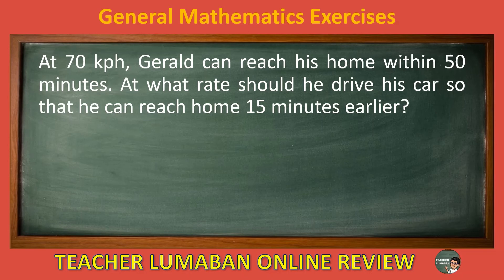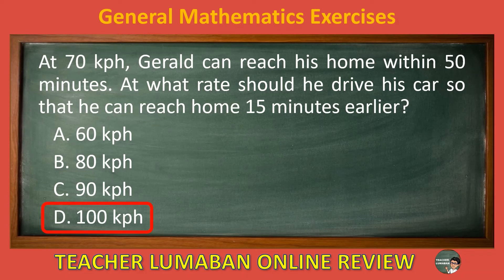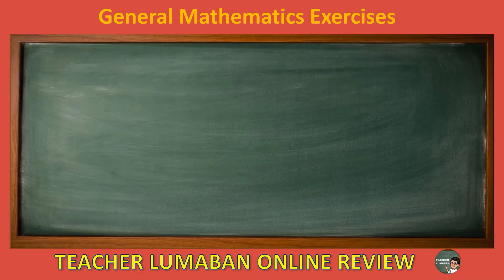At 70 km per hour, Gerald can reach his home within 50 minutes. At what rate should he drive his car so that he can reach home 15 minutes earlier? Letter A: 60 km per hour. Letter B: 80 km per hour. Letter C: 90 km per hour. Letter D: 100 km per hour. The correct answer is letter D: 100 km per hour. The rate he should drive to reach home 15 minutes earlier is 100 km per hour.